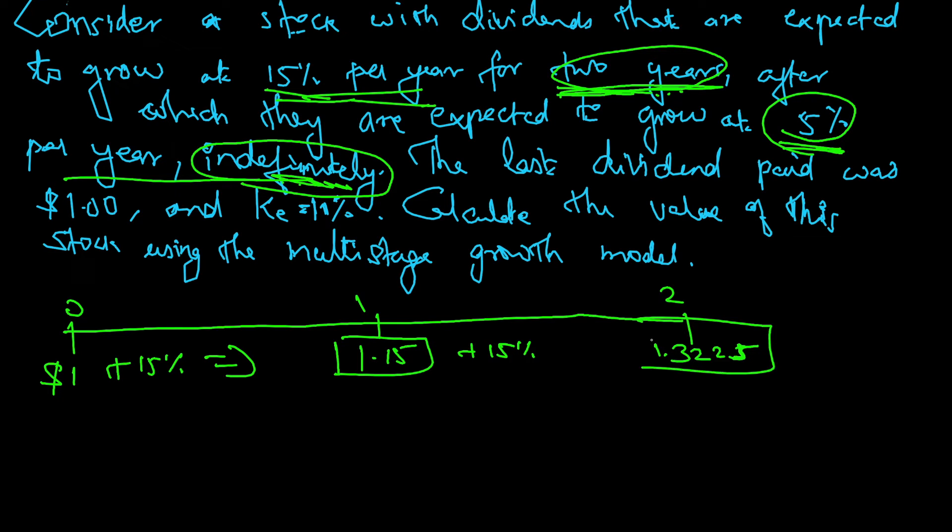Now from here on, sustainable growth is happening indefinitely. That means constant growth rate which is 5%, so I can apply Gordon growth model from here itself.